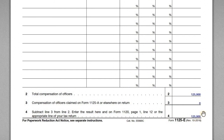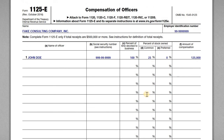The line 4 figure flows through to page 1, line 12 — this is a deductible expense for the corporation. That covers it. It's a pretty straightforward form, but it's important to make sure you attach it if you're required to. If you miss a form, the IRS can assess penalties for failing to include all required forms and schedules when you file your tax return.